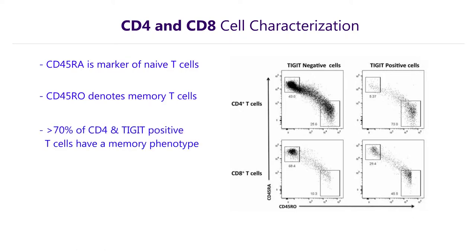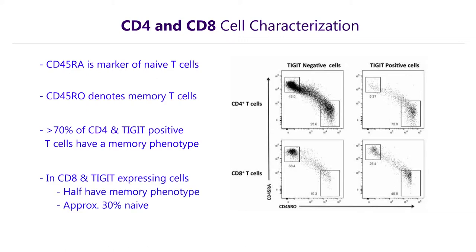However, this same trend is not seen in CD8 and TIGIT expressing cells. Only half of them had a memory phenotype, while approximately 30% were naive.